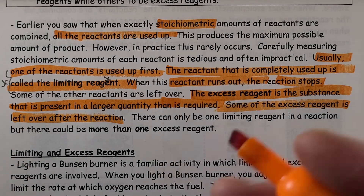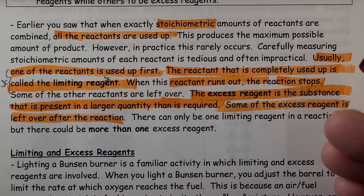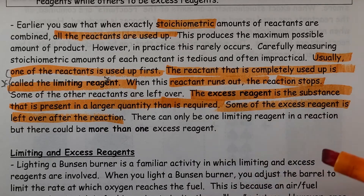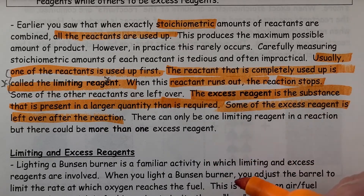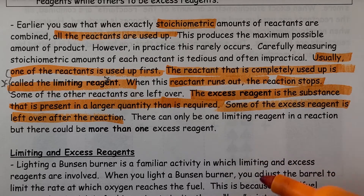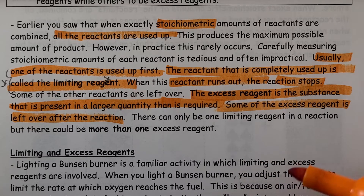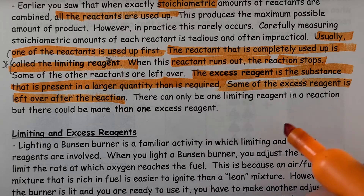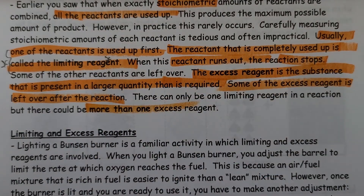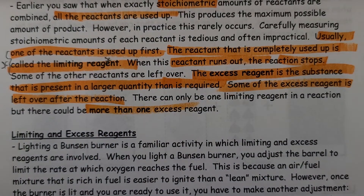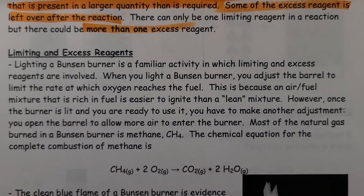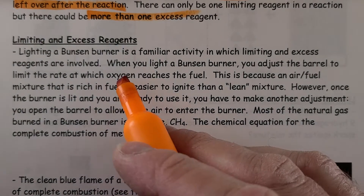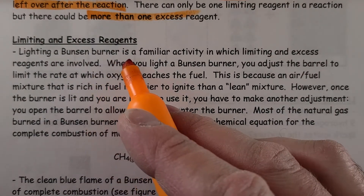We can think of it this way: if you bought eight wieners and a dozen hot dog buns, you'd have four buns left over and all the hot dog wieners would be used up — a real-life scenario like that. There can only be one limiting reagent, but there could be more than one excess reagent. That's how limiting and excess reagents work — what's left over, what's used up.